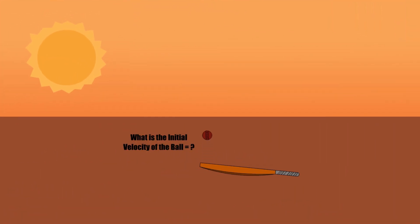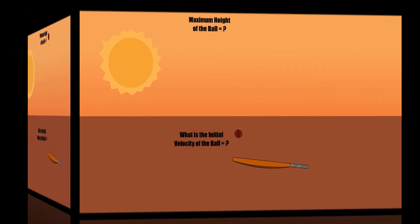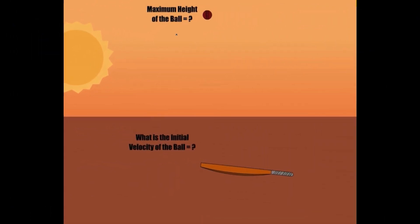Let's see the scenario. The ball is hit vertically upward. It reaches a maximum height and returns back to its initial position. To solve this problem and find the maximum height and the initial velocity, first we have to find the time that the ball took to reach the maximum height.